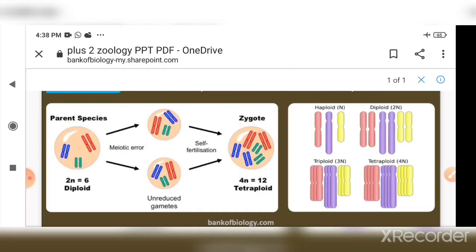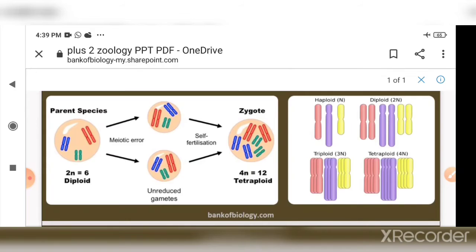For example, imagine a cell with 46 chromosomes. After failed cytokinesis, both sets remain in one cell: 46 plus 46 chromosomes. This condition is polyploidy and is generally found in plants, not in humans.